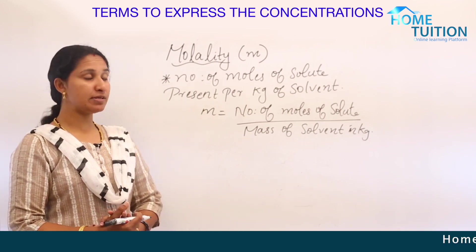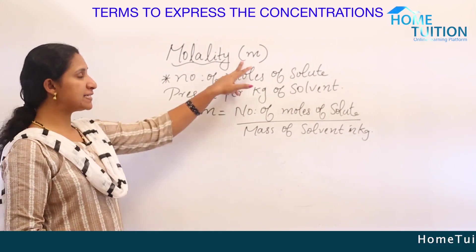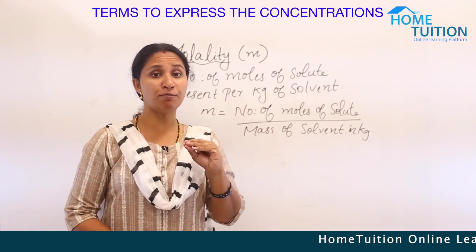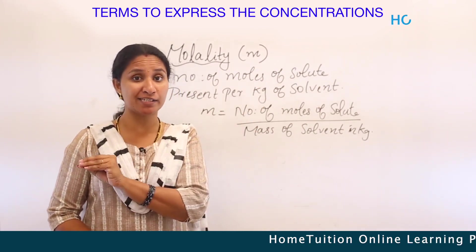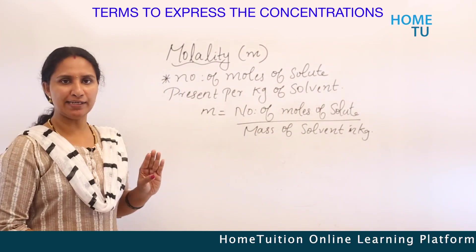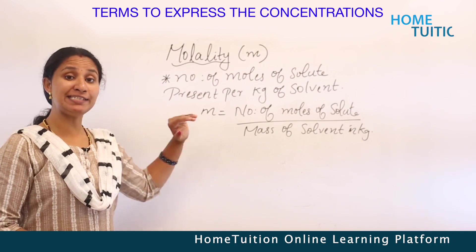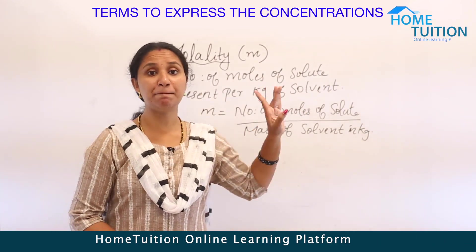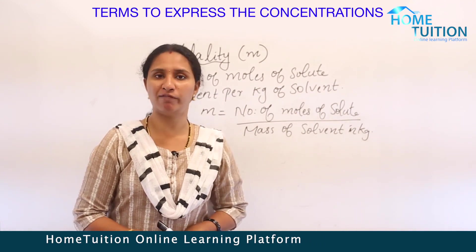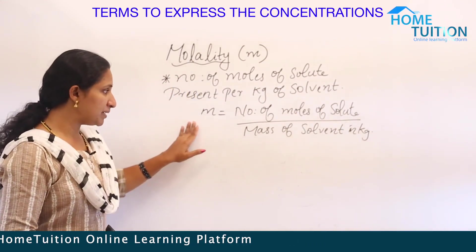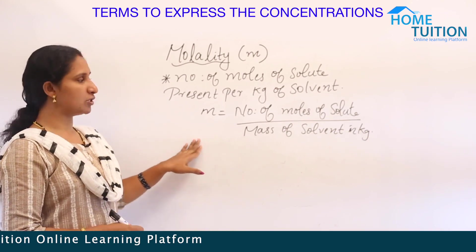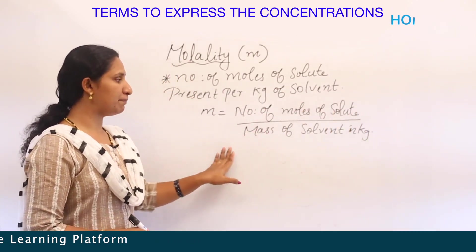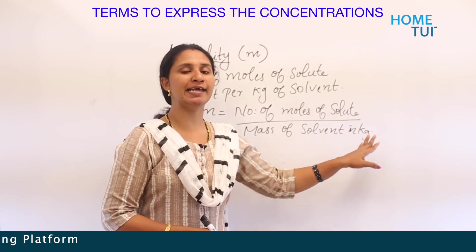Next is molality, represented by small m. Molality is defined as the number of moles of solute present per kilogram of solvent. Small m equals number of moles of solute divided by mass of solvent in kilograms.